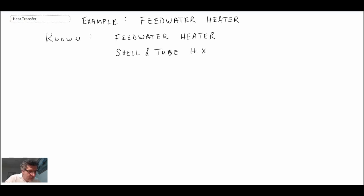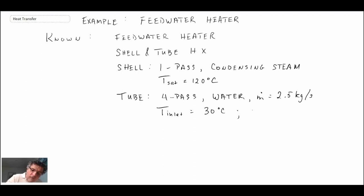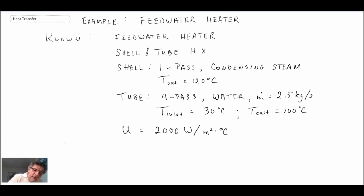We're told that it's a shell and tube heat exchanger and we're given information for both the shell and the tube sides. On the shell side, it is a one-pass configuration and the fluid is condensing steam with a saturation temperature of 120 degrees C. We're also given the overall heat transfer coefficient, and we're looking for the area of the heat exchanger that would correspond to that coefficient.